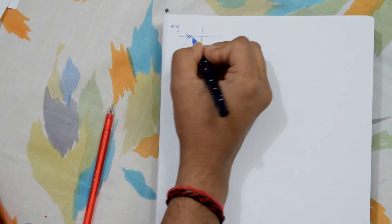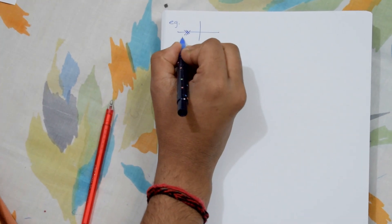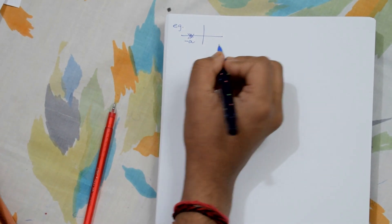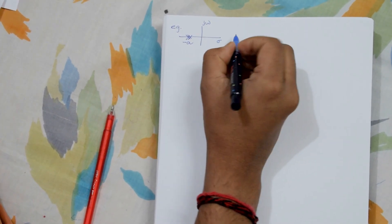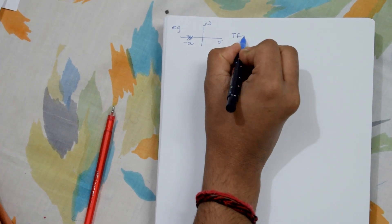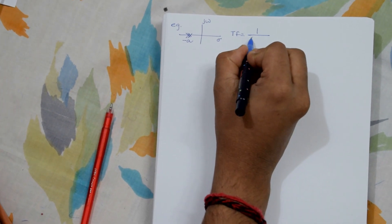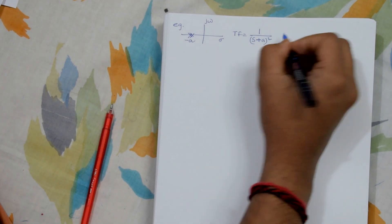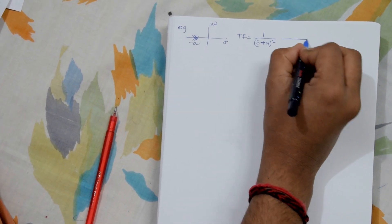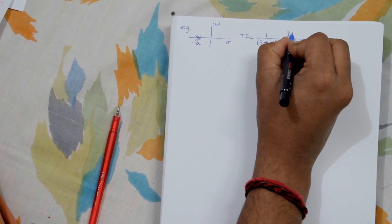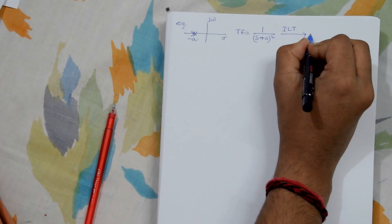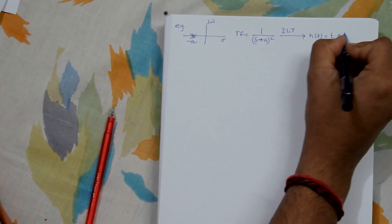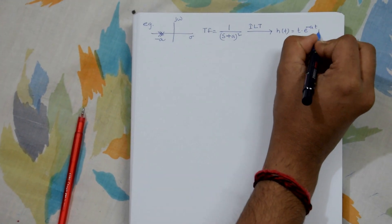Now we will take repeated poles at a position. Let's take two poles at minus a. The transfer function is 1 by (s + a)². The inverse Laplace transform of this is h(t) = t · e^(−at) · u(t).